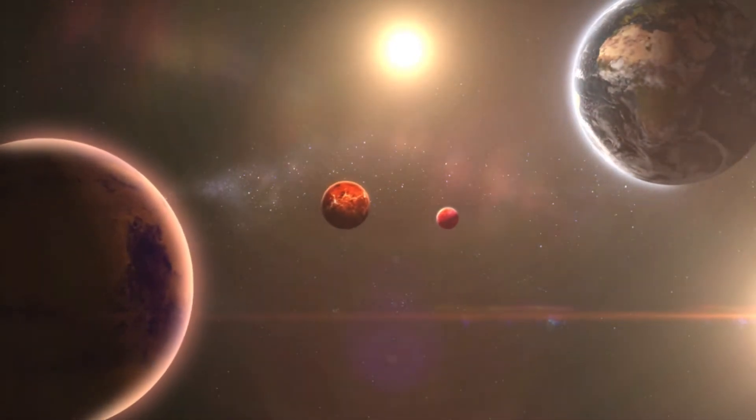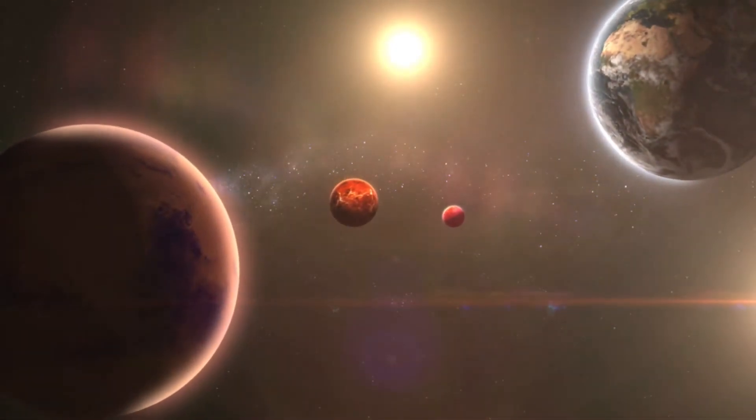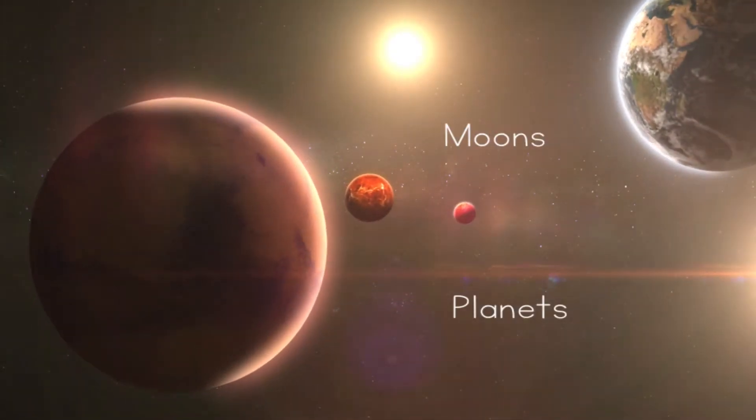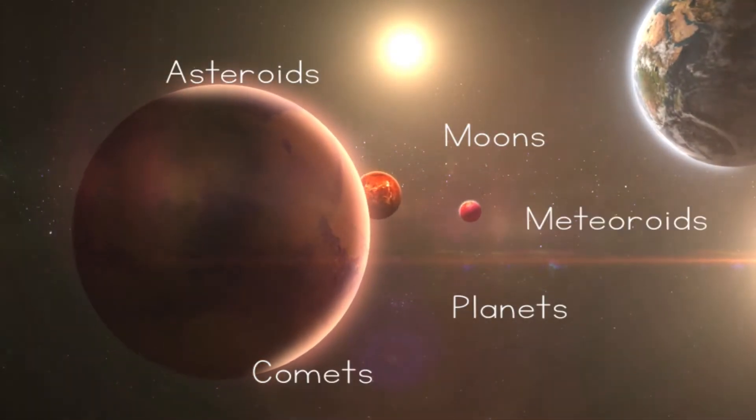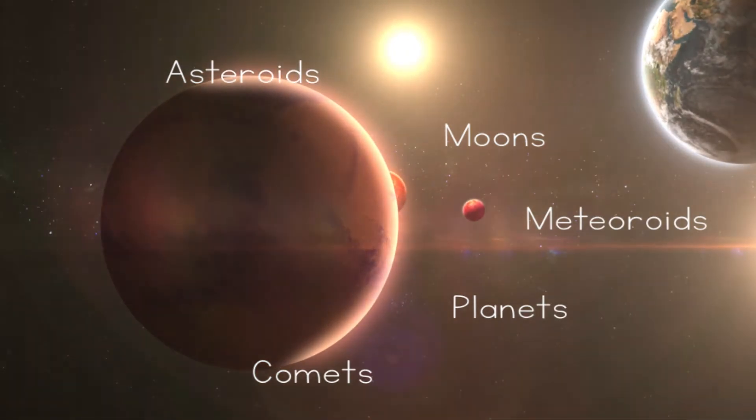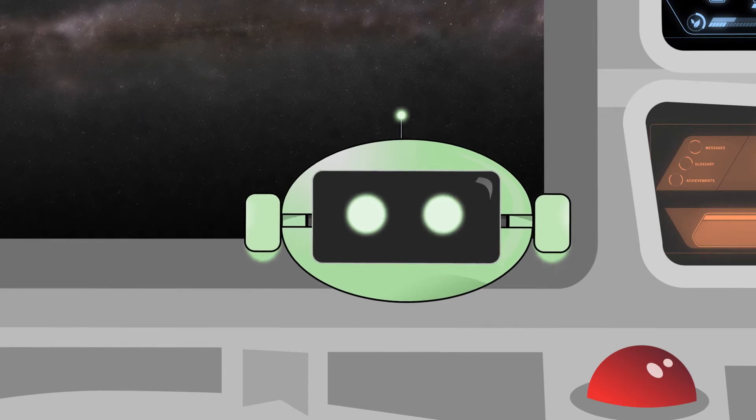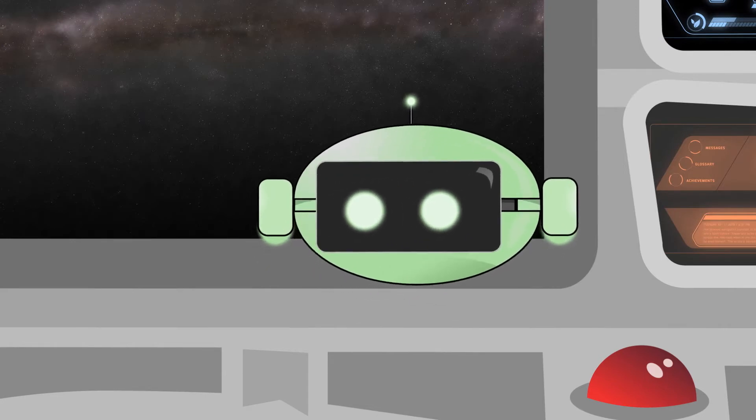As you might be able to guess from the name, a solar system is a star and all the objects that travel around it. Planets, moons, asteroids, comets, and meteoroids are all a part of a solar system. Since there are billions of stars in our universe, there must be billions of solar systems, right?